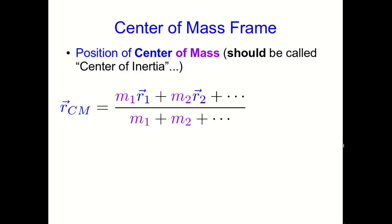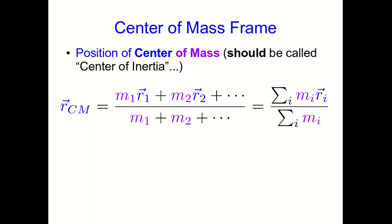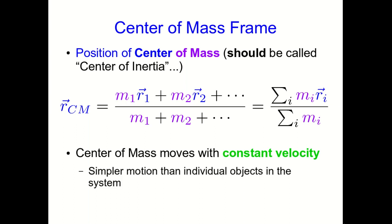What will work for two objects will work for any number. We just have to carry out this weighted average over all of the position vectors of all of the objects, and we can write that more compactly with a summation notation. And we've already seen that the center of mass moves with constant velocity, so just note that is much simpler than the motion of the individual objects in the system. And that makes the center of mass an inertial reference frame, which seems like it would be useful. So wouldn't it be nice to be able to calculate the center of mass velocity?